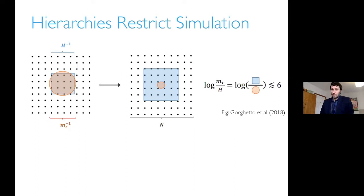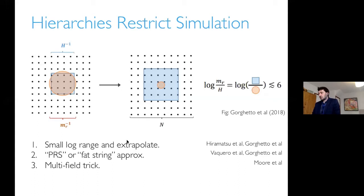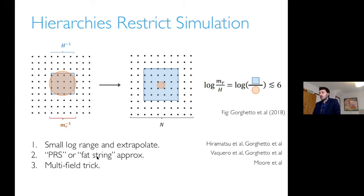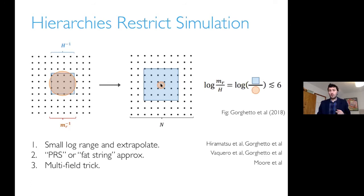There are different ways of doing this. You can simulate a small log range and extrapolate — the approach taken by some groups. You can use a trick that keeps the size of strings constant even when the Hubble scale grows — the Press-Ryden-Spergel or fat string approximation. Or there's another trick where you introduce some UV dynamics by hand that also keeps the string size fixed but hopefully doesn't affect the larger-scale dynamics — the approach taken by Guy Moore and collaborators.